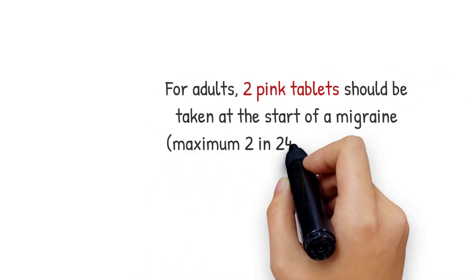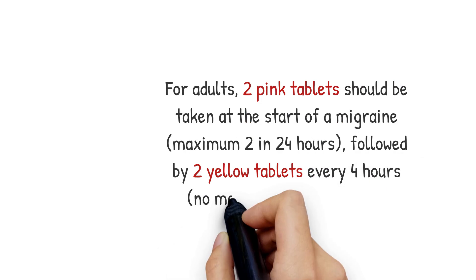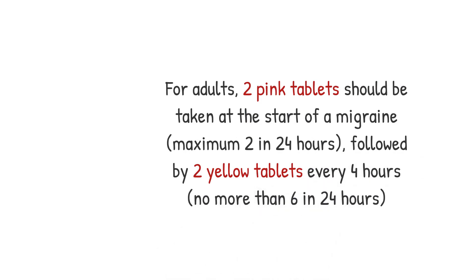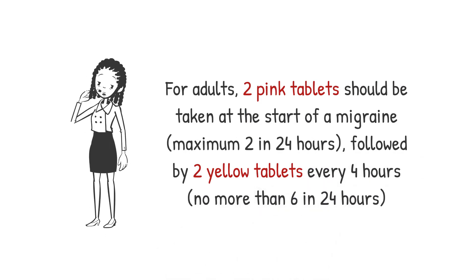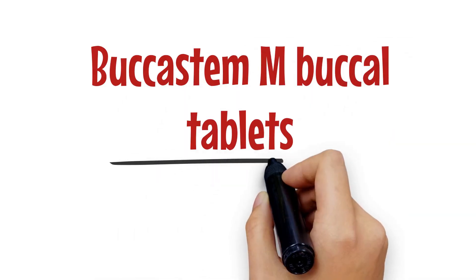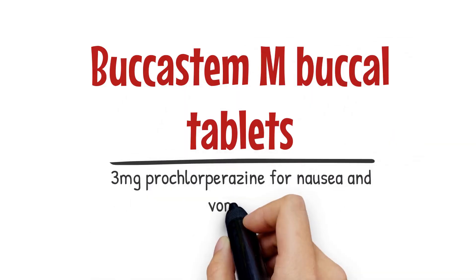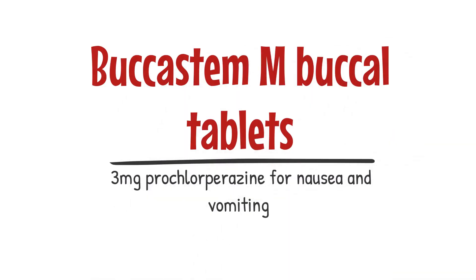For adults, two pink tablets should be taken at the start of a migraine, maximum two in 24 hours, followed by two yellow tablets every four hours, no more than six in 24 hours. Acumed M buccal tablets can also be purchased, containing 3mg prochlorperazine for nausea and vomiting.